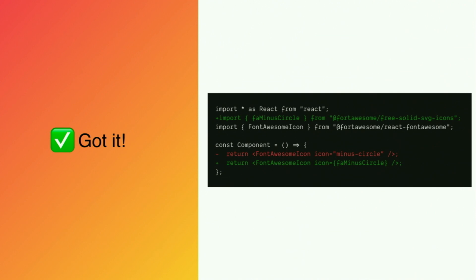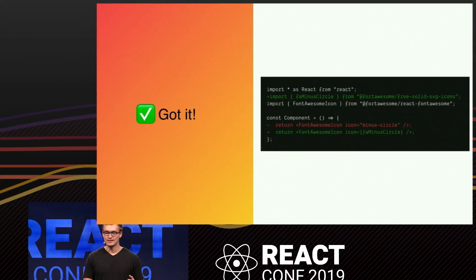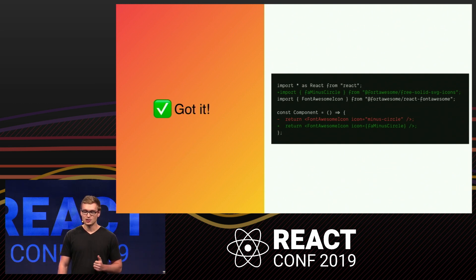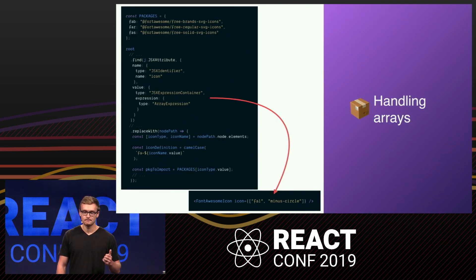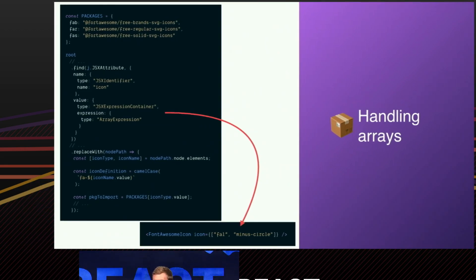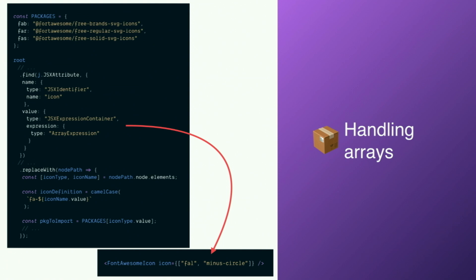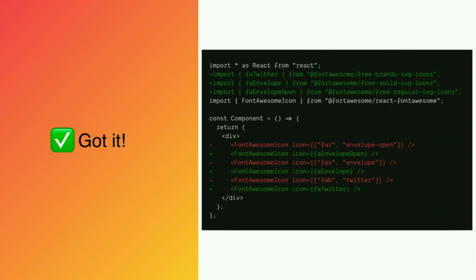There's also the array syntax, which has two elements: the first being the icon style and the second being the icon name. To handle arrays, we first define all of the different possible font styles and their packages at the top of our transform. Now we're looking for an icon prop with a JS expression where the value is an array. The first element is used to dynamically look up the proper package — whether that's regular, solid, or light — and the second element is the icon name, transformed the same way as before. This also handles the array syntax and replaces it with the proper icon from the proper corresponding package.